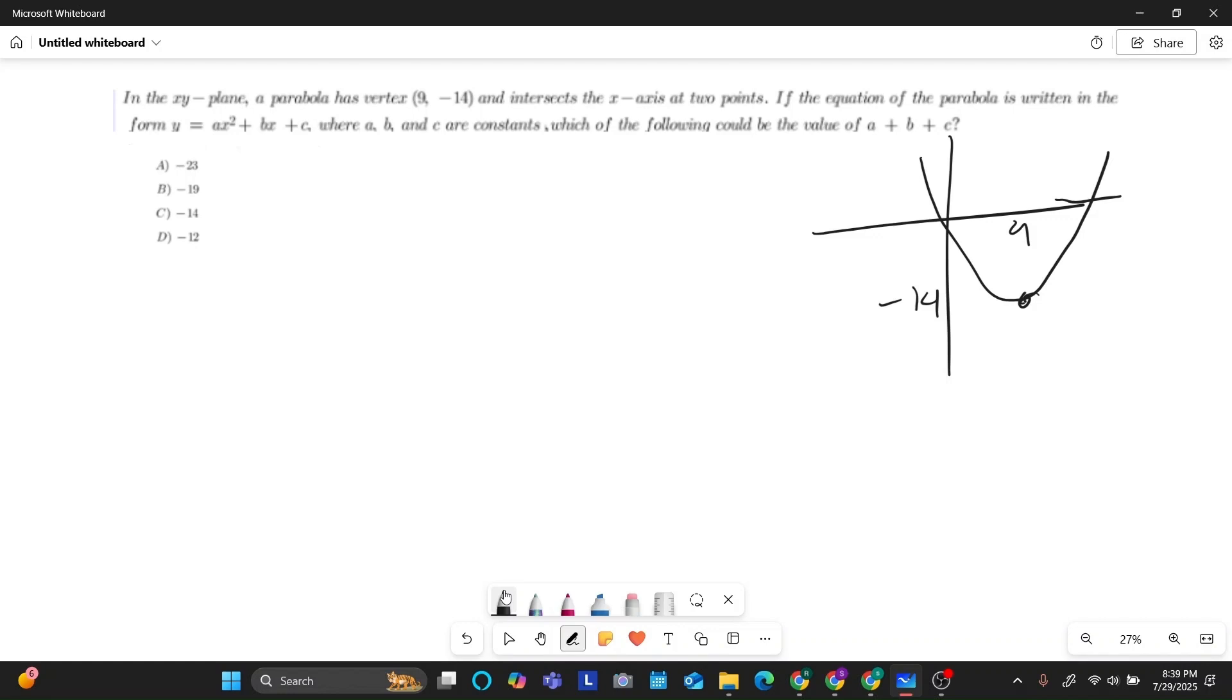And the other thing it tells us is that we have this vertex right here. So using the vertex, we can actually write a parabola's equation in something called vertex notation. And so that is just going to be a times x minus h. In this case, h is the x-coordinate of the vertex. So that'd be 9. All that squared. And then plus k, which is the y-coordinate of the vertex. In this case, that's just negative 14.